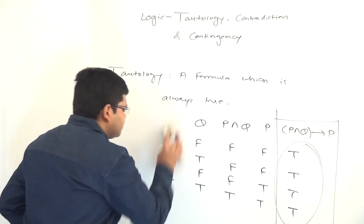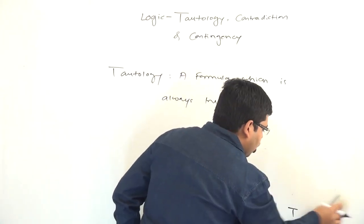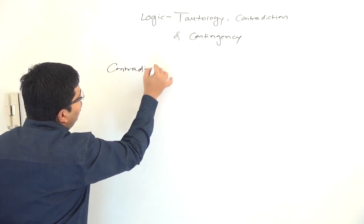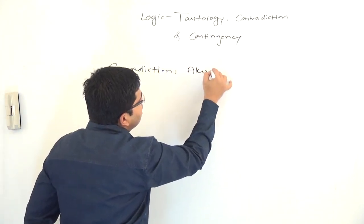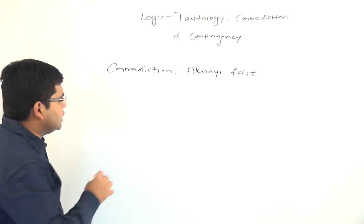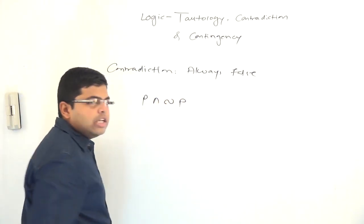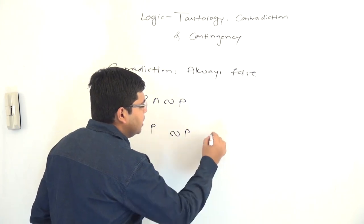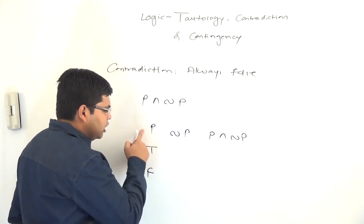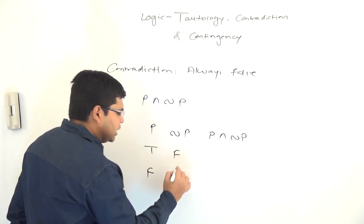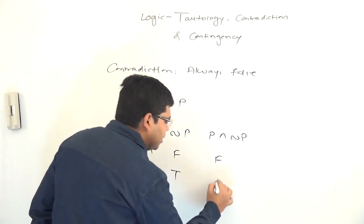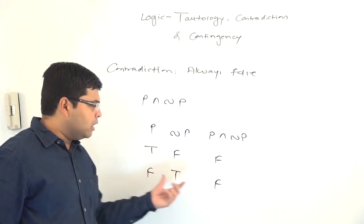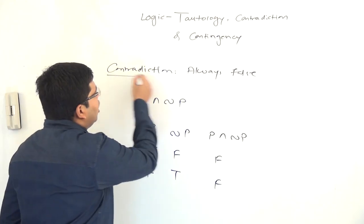The second category is a formula which is always false, called a contradiction. Contradiction is the exact reverse of tautology. A formula which is always false will be called a contradiction. A simple example is p∧¬p. Whatever value is assigned to p, p∧¬p will always be false. In the truth table: if p is true, ¬p is false, and true∧false = false; if p is false, ¬p is true, and false∧true = false. Independently of the value of the variable, the formula will always be false, so such a formula is called a contradiction.